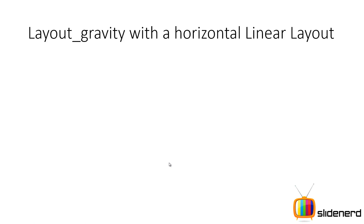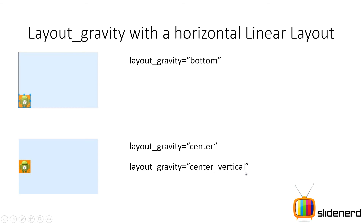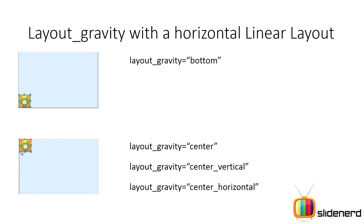Let me show you an example of what happens when an image view is given different values of layout gravity. When I say layout gravity is bottom, the image view goes straight to the bottom. When I say layout gravity is center, it comes to the center — but remember, even though I said center, it stays in the center vertical zone because layout gravity does not allow the image to change columns. Center vertical gives the same result. But if you say center horizontal, it goes back to the default location because center horizontal is not supported by a horizontal linear layout — Android just places the view back in the default location without any errors.